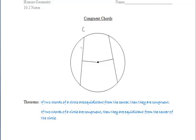And the second theorem says if two chords of a circle are congruent, then they are equidistant from the center of the circle. Let's go ahead and label the diagram as follows.